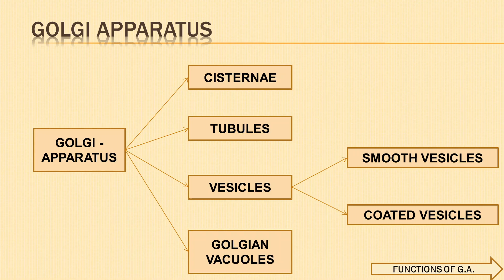Golgian vacuoles are large, spacious, rounded, sac-like structures occurring at the distal ends of cisternae. The Golgi membranes are rich in phospholipids, proteins and enzymes such as ADPase, ATPase and glucose-6-phosphatase.